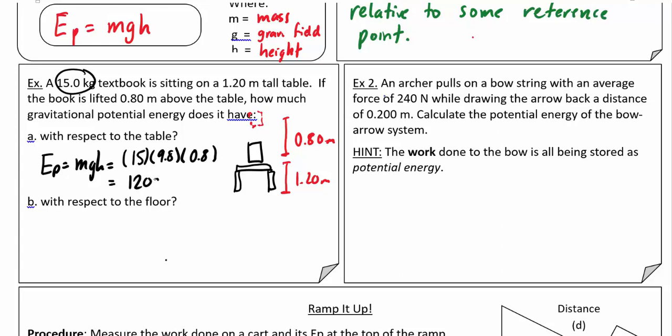However, with respect to the floor, if we were to drop this textbook down and it were to hit the table, it would have 120 joules of energy. But if we dropped it instead to hit the floor, how much energy is available? mgh again equals 15 times 9.8, and in this case the total height would be 2 meters, so the energy here would be right around 294 joules.